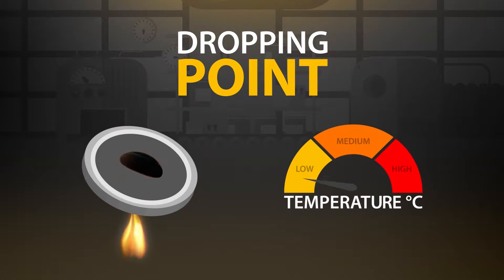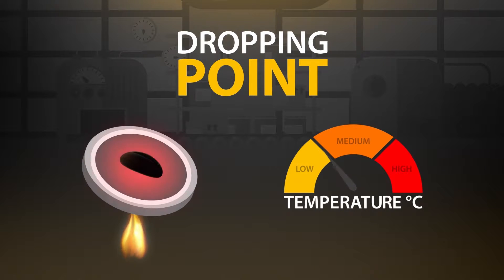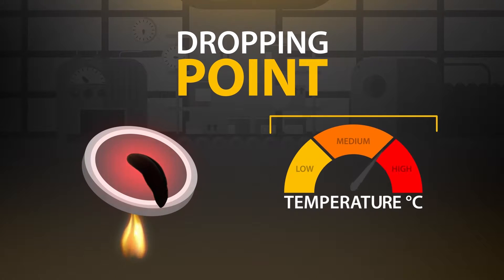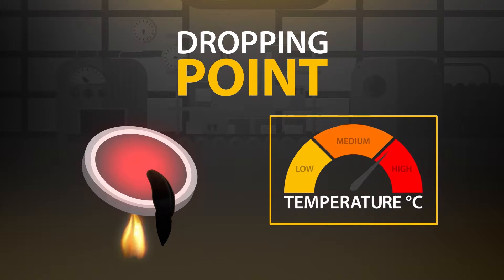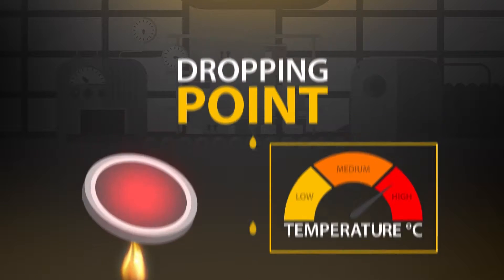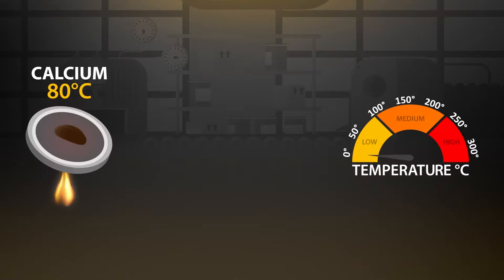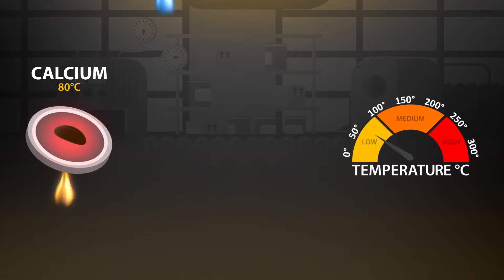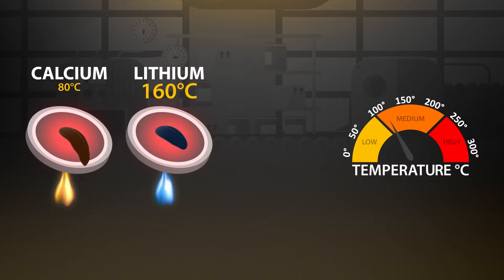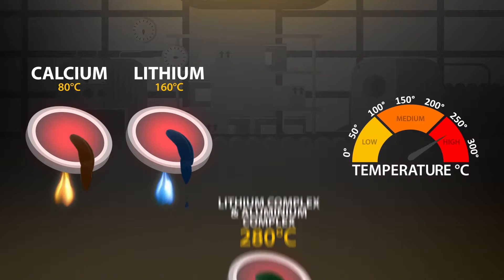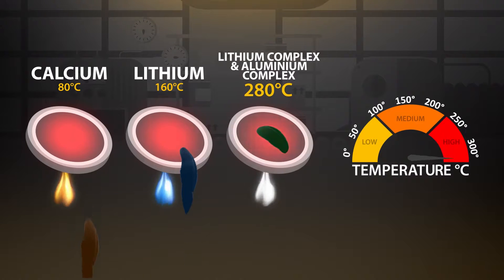It is critical to consider the dropping point when making grease, which refers to the temperature at which the oil separates from the soap thickener. Metallic soaps have different dropping points, some as high as 280 degrees Celsius, or even no dropping point at all.